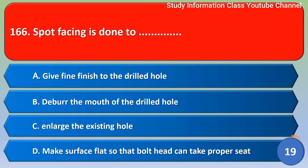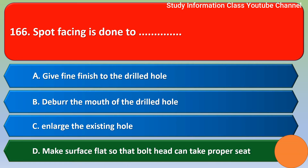Next question: spot facing is done to — Option A: give fine finish to the drill hole. Option B: deepen the mouth of the drill hole. Option C: enlarge the existing hole. Option D: make surface flat so that bolt head can take proper seat. The correct answer is Option D — make surface flat so that bolt head can take proper seat.